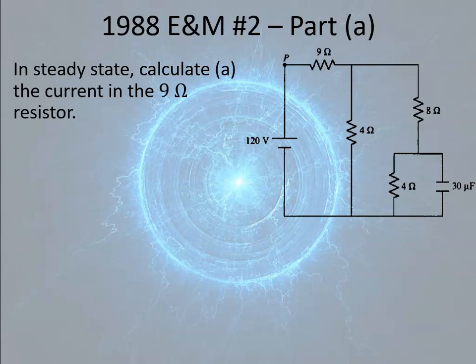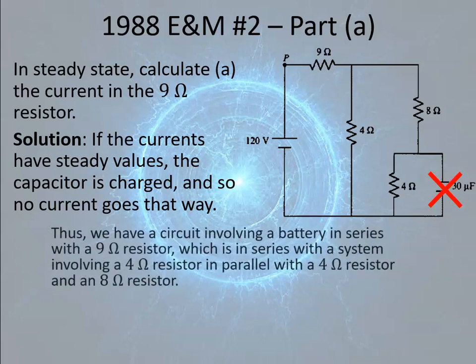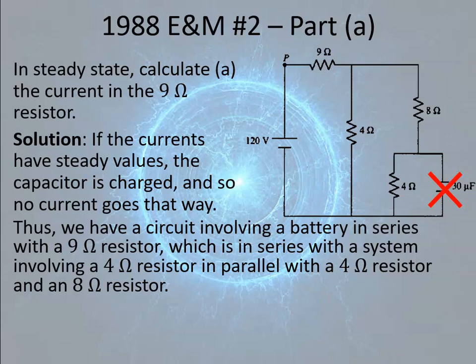In part A, we have this capacitor and circuit, and we're saying that the circuit has reached steady state. In other words, the capacitor is fully charged. The question is: calculate the current in the 9 ohm resistor up here. Since it's steady state, the capacitor is fully charged, which means no current is going through it. We can completely imagine that we get rid of it, so we have a circuit in which we have this 9 ohm resistor in series with the rest of this stuff.